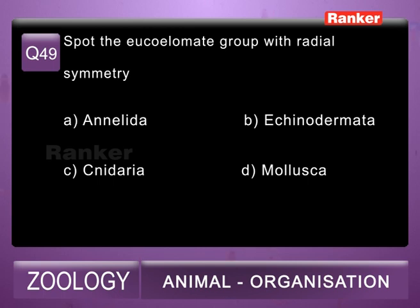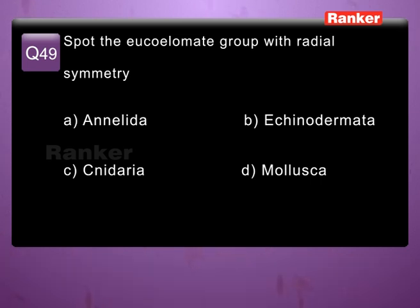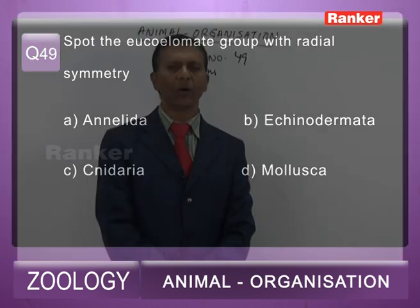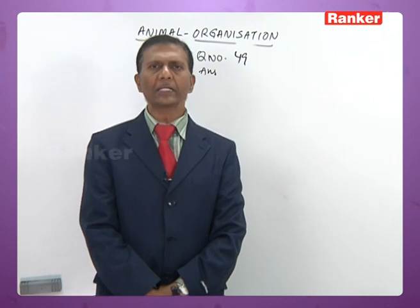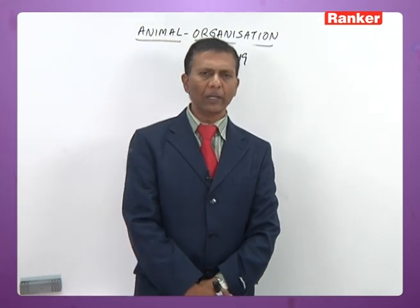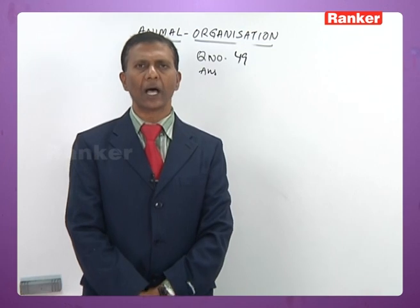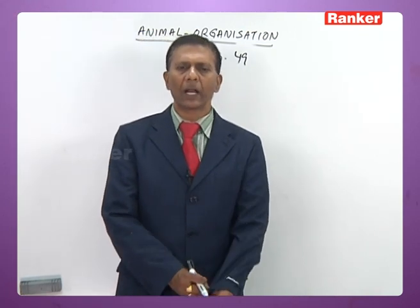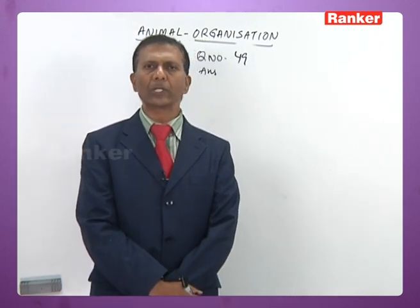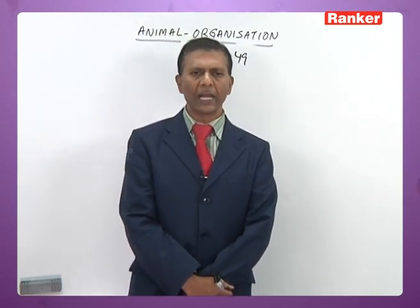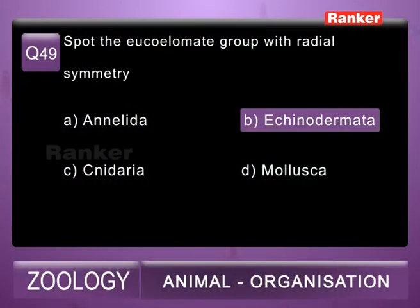Question 49: spot the eucoelomate group with radial symmetry — A) Annelida, B) Echinodermata, C) Cnidaria, D) Mollusca. Annelids are pseudocoelomates with bilateral symmetry. Cnidarians do not have a eucoelomate at all. Molluscs are schizocoelomates but bilaterally symmetrical. Echinodermata are eucoelomates where adults are pentamerously radially symmetrical. So the 49th question correct answer is B, Echinodermata.